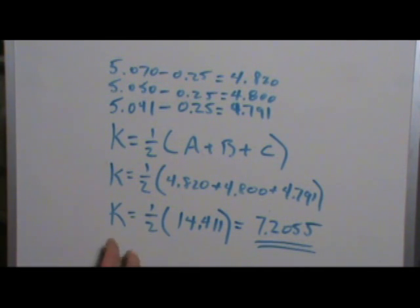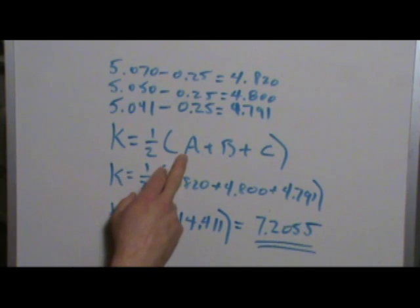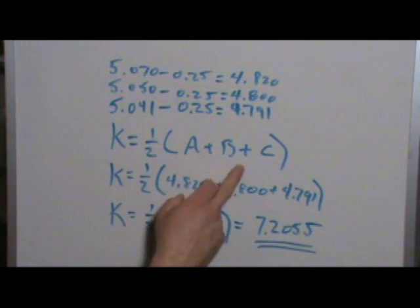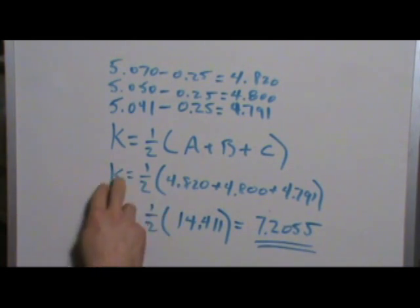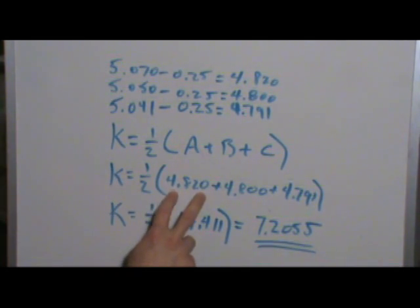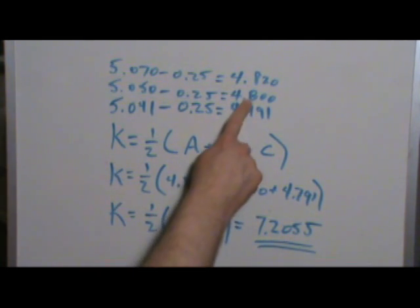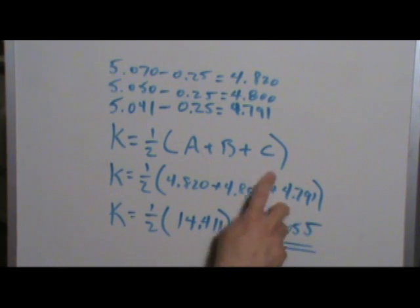Now the next thing I have to do, I need to calculate this little constant k that we'll use in further equations to define our spherometer. The equation is k equals one-half of the quantity a plus b plus c, and a, b, and c are just these three distances. So the equation becomes k equals one-half of 4.82 plus 4.800 plus 4.791. Add those three together, you get 14.411, take half of that, and k ends up equal to 7.2055.